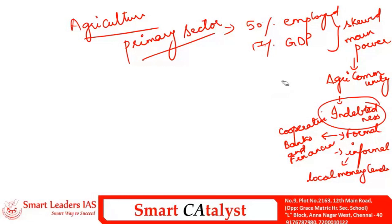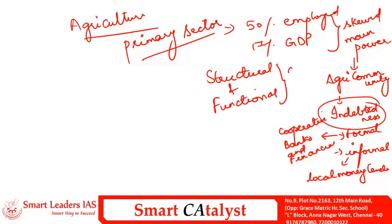Agri indebtedness is only one of the problems plaguing the Indian agriculture system. There are many structural and functional reforms yet to be undertaken in the agri economy of the country. The skewed focus on agri indebtedness — caused by skewed distribution of manpower — has put India's agriculture system in a strange scenario. We will see the problems associated with loan waivers and the reforms that should be undertaken.